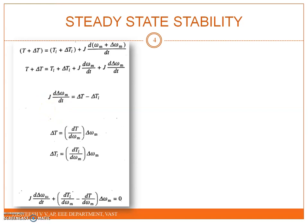For small perturbations, the speed-torque curves of the motor and the load can be assumed to be straight lines. We can write: delta T equal to dT by d-omega_M times delta omega_M, and delta T_L equal to dT_L by d-omega_M times delta omega_M, where dT by d-omega_M and dT_L by d-omega_M are respectively the slopes of the steady state speed-torque curves of the motor and the load at the operating point under consideration.